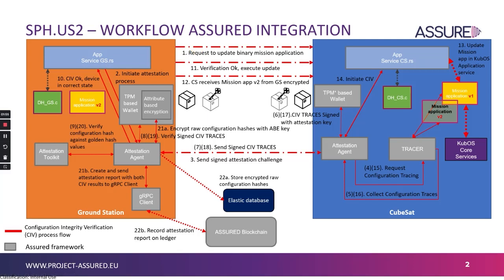As a first step, the App Service sends a request to update the binary mission application. The App Service then pings the attestation agent and initiates the attestation process. The attestation agent sends a signed attestation challenge to the attestation agent in the CubeSat, which requests configuration tracing from the Tracer.